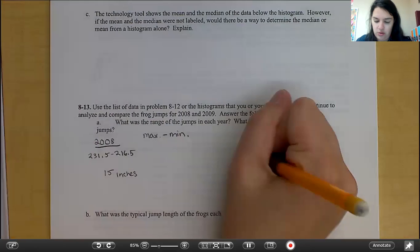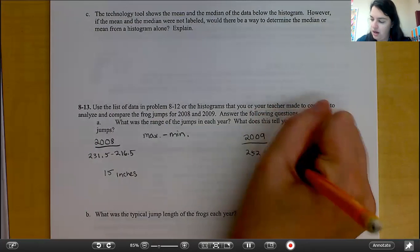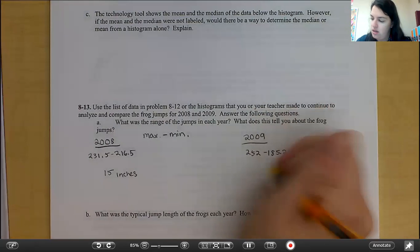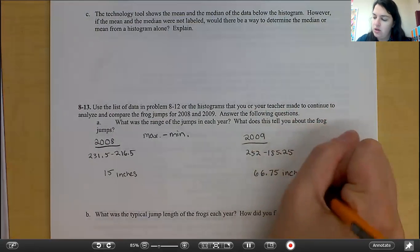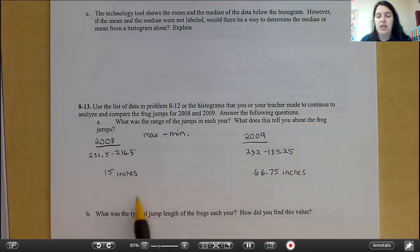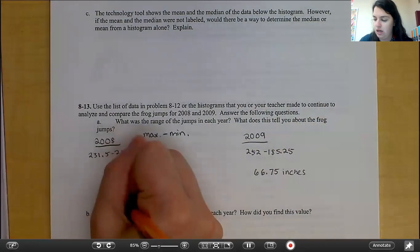And over here, you would have had 252 minus 185.25. That would have been 66.75 inches. So, therefore, we can see because 2008 has a lower range that the frogs jumped more consistently in 2008.